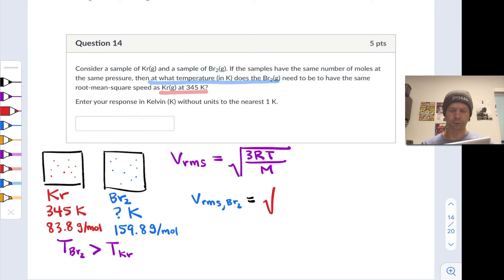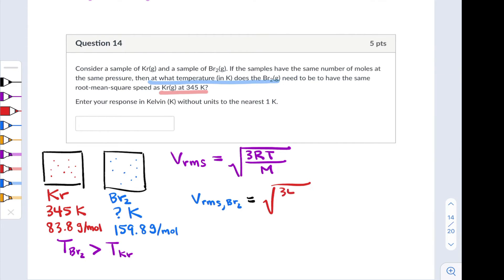And so I can say, for instance, on the right-hand side where everything is known, the root mean square speed is proportional to the temperature, 345 Kelvin divided by the molar mass, 83.8 grams per mole. And on the left-hand side, I'll have a similar expression with the temperature unknown in the numerator. Let's call that TBr2. And in the denominator, I'll have that molar mass, 159.8 grams per mole.